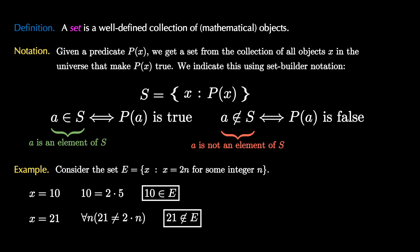Let's check a couple more. Let's consider the real number x is pi. Well, this is not twice any integer either, and therefore pi is not an element of E.